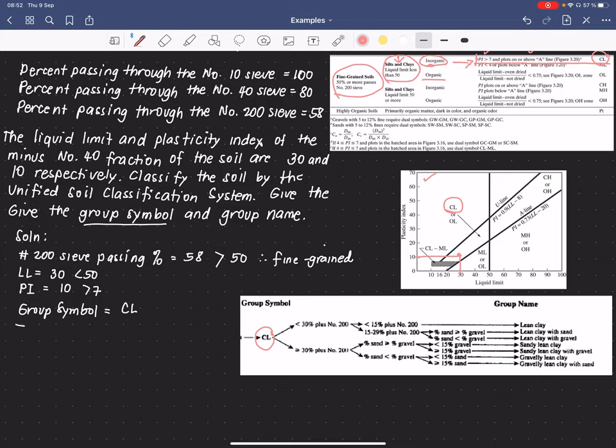The next information that we have to satisfy is the percentage that is retained of the number 200 sieve. So the percentage retained in number 200 is equivalent to 100 minus 58%, which is 42%. Therefore, we are in this data, wherein the percentage larger than number 200 is greater than 30%.